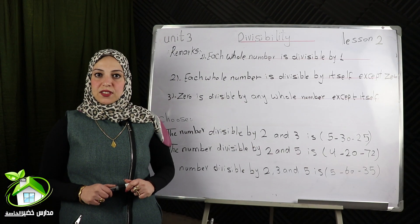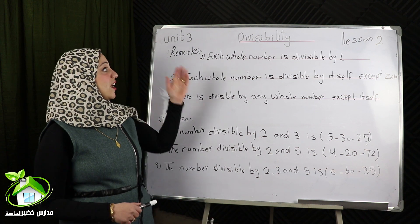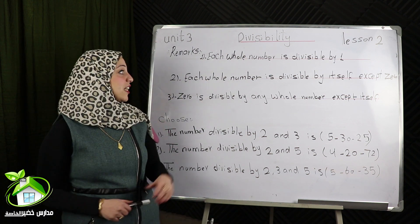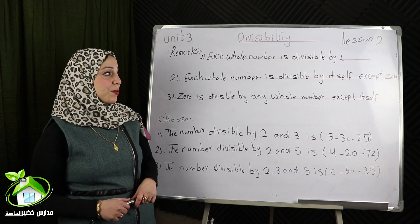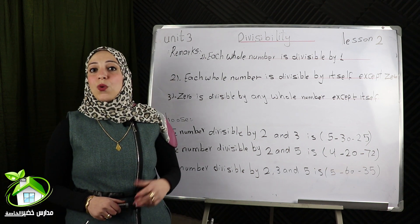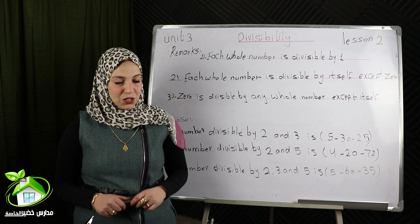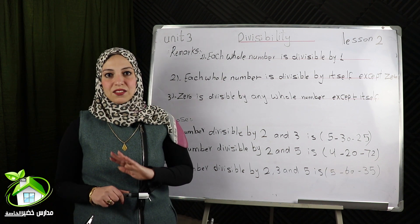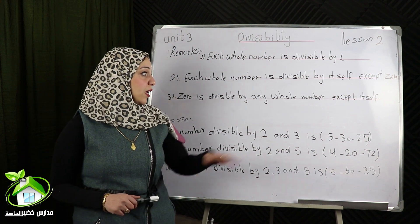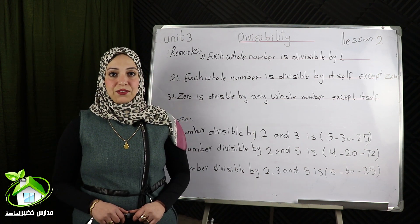I will revise some important remarks. The first one: each whole number is divisible by 1. Each whole number is divisible by itself except 0. Why except 0? Because I can't divide 0 by any number. 0 is divisible by any whole number except itself.